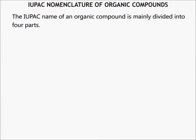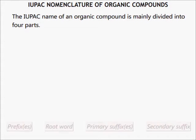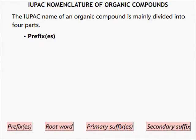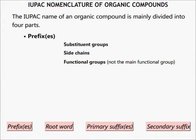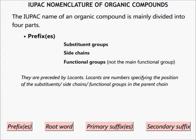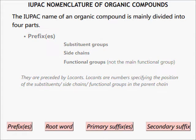The IUPAC name of an organic compound is mainly divided into four parts. Number one: prefixes. This contains substituent groups, side chains, and functional groups which are not the main functional group, preceded by locants. Locants are numbers specifying the position of the substituent groups in the parent chain. The following table shows some substituents which can only be prefixes.